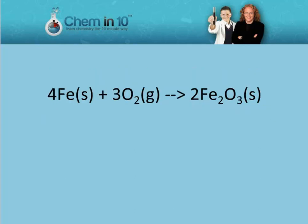In this reaction, iron gives up 3 electrons, and 2 oxygen atoms combine with iron to form iron 3 oxide.